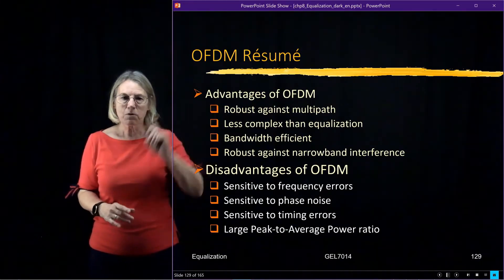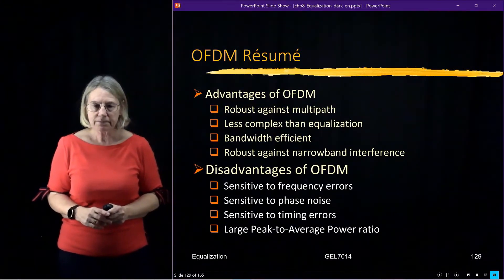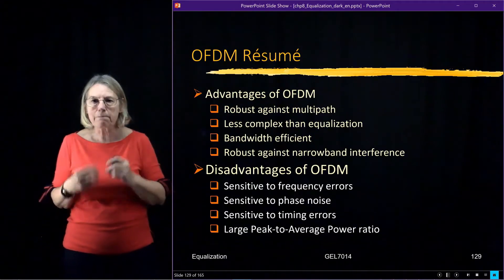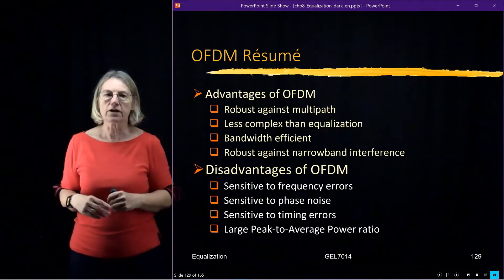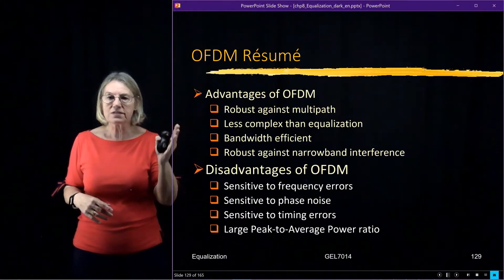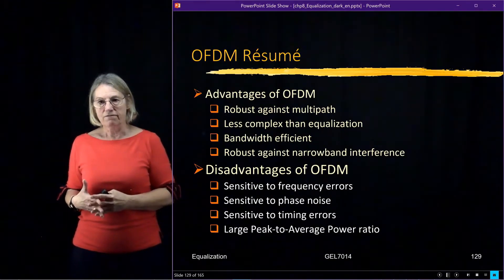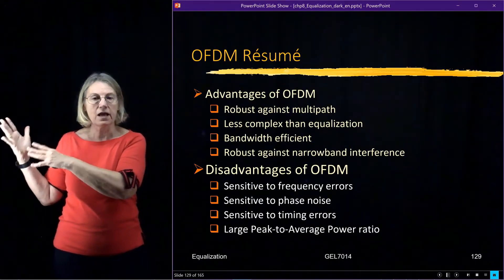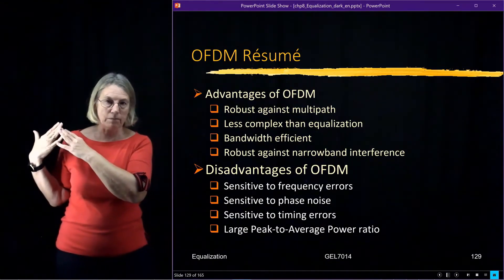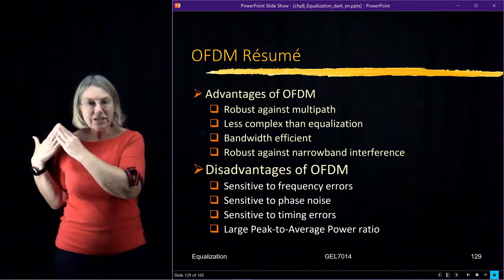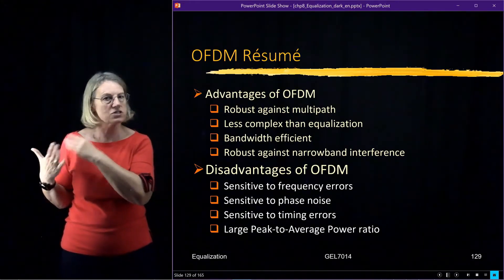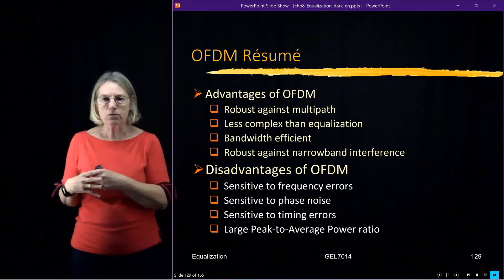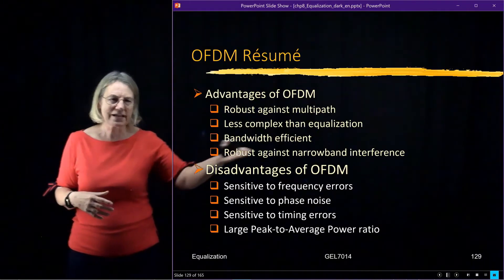A little summary on what's going on with OFDM. What are the advantages? Why are we turning to OFDM? It's because it's robust against multipath — that's the main motivation. It's less complex than equalization; compared to very advanced maximum likelihood sequence estimation, it's much less complex. It might be similar in complexity to a linear solution, but potentially higher performance. It's also very spectrally efficient and uses the bandwidth well.